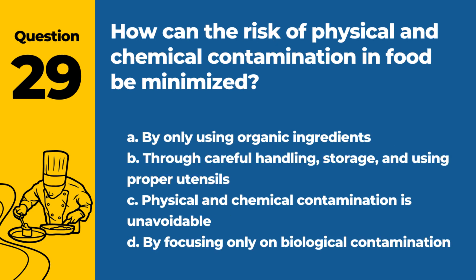Question 29. How can the risk of physical and chemical contamination in food be minimized? A. By only using organic ingredients. B. Through careful handling, storage, and using proper utensils. C. Physical and chemical contamination is unavoidable. D. By focusing only on biological contamination. Answer: B. Minimizing contamination risks involves careful handling, proper storage, and using the right utensils and equipment.